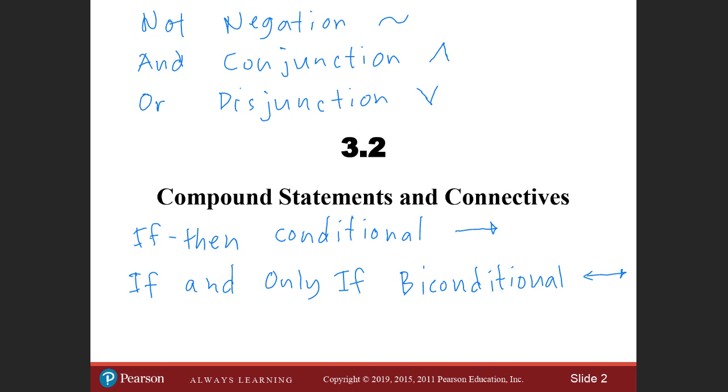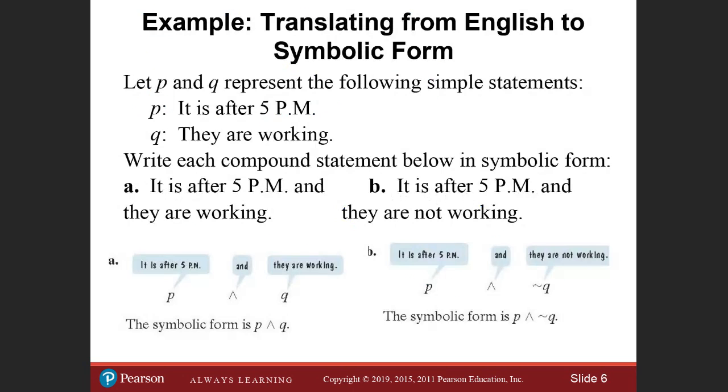So here's an example. So we assigned the symbolic logic P from the first statement and Q for the second. And then when you use and connect that with the word and over here, then in symbolic form you're using that symbol like the capital letter A. So P with the statement here as given and Q with the statement is given here. And you can actually say that it is after 5 p.m. and connect it with and they are working.